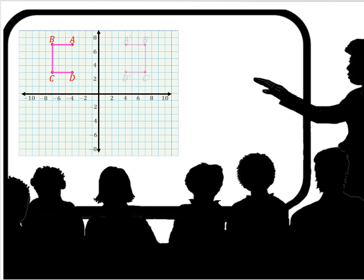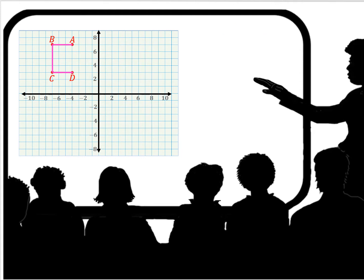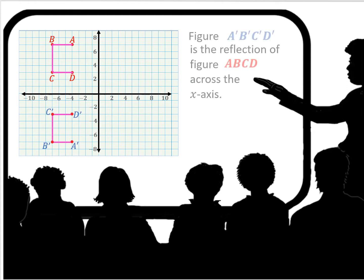Now in terms of geometry, we have the figure on the left, ABCD, in red. And over to its right, we have ABCD, and that is a reflection of the first figure. It's on the right side of the y-axis, so it is the reflection of the first figure across the y-axis. Now looking at our original figure, we see its reflection across the x-axis. Figure ABCD in blue is a reflection of figure ABCD in red across the x-axis.